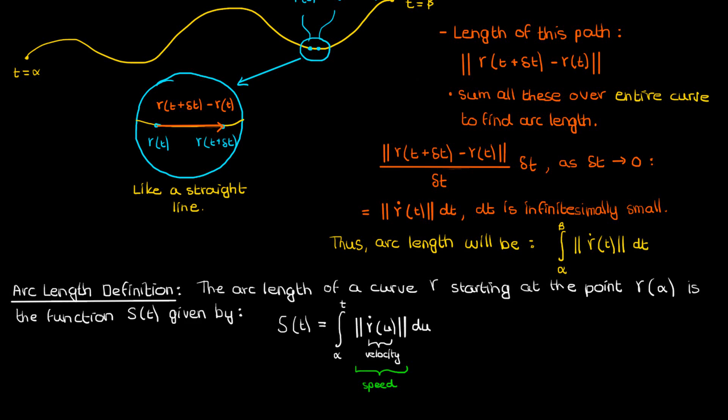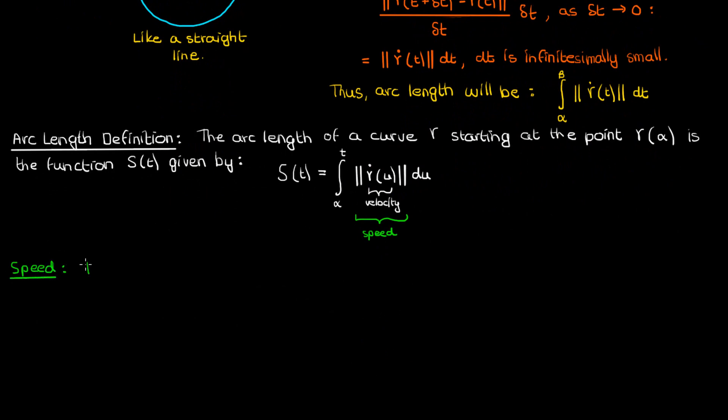This physics intuition leads us to another concept in differential geometry, the idea of speed. If γ is a parametrized curve going from α to β, then its speed at a point t is given by the magnitude of its derivative at t. This is basically what we just discussed.